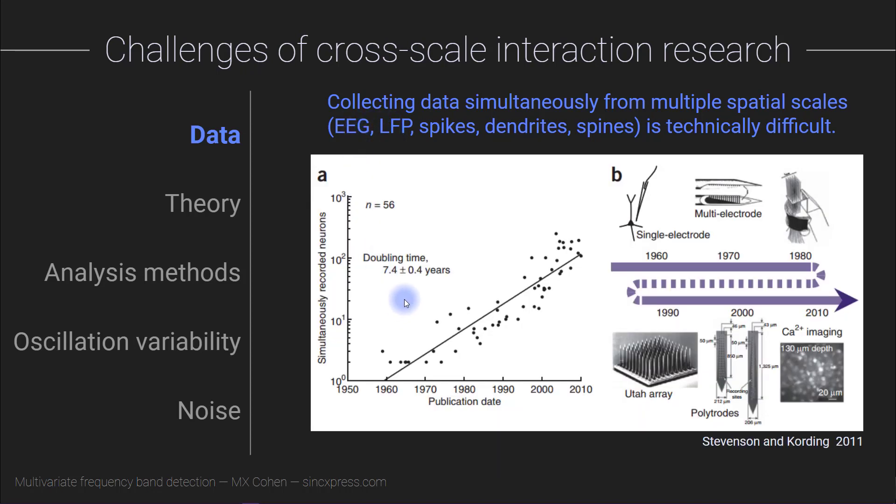But fortunately, the technology is improving rapidly, and this is allowing us to record more and more data simultaneously from the brain. For example, here is a plot showing the number of simultaneously recorded neurons, basically a measure of the data set size, the multivariate data set size. You can see this appears to double about every seven and a half years over the past half century.